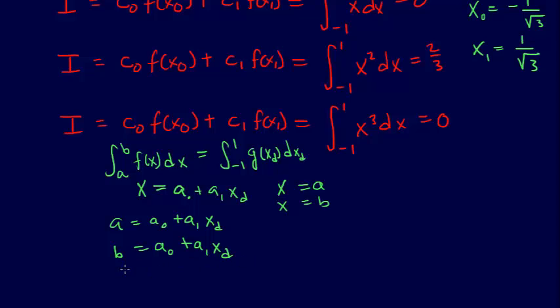So here we have two equations, two unknowns, we can solve, and then we have x equals a₀ plus a₁ xd. So we solve these two equations simultaneously.